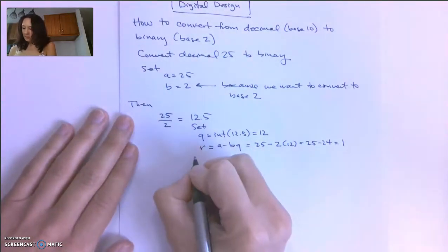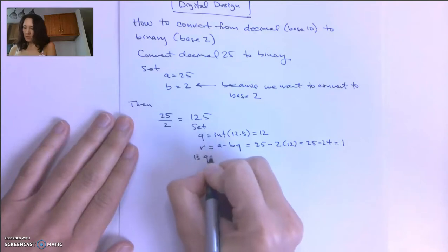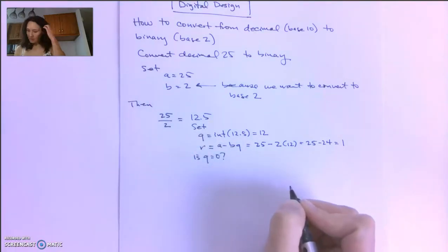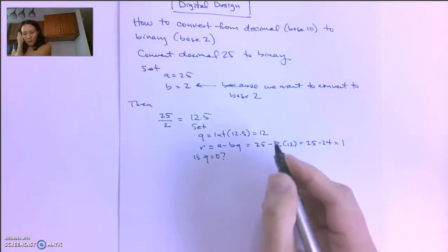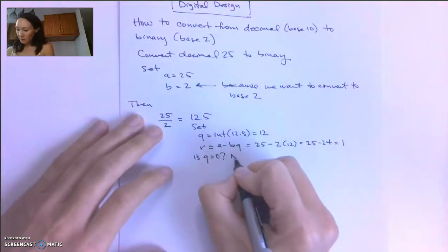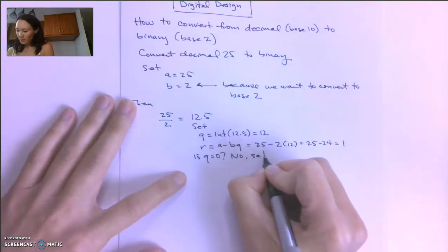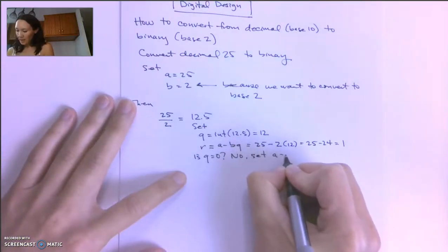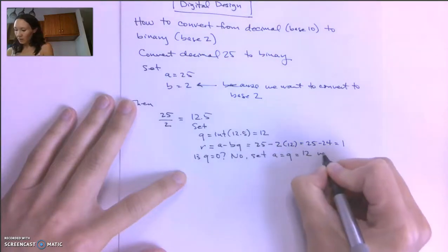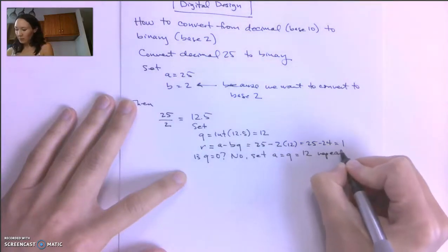Then we ask ourselves: is Q equal to 0? Our Q is equal to 12, so the answer is no. If the answer is no, we're going to set A equal to Q, which is 12, and we're going to repeat the algorithm.